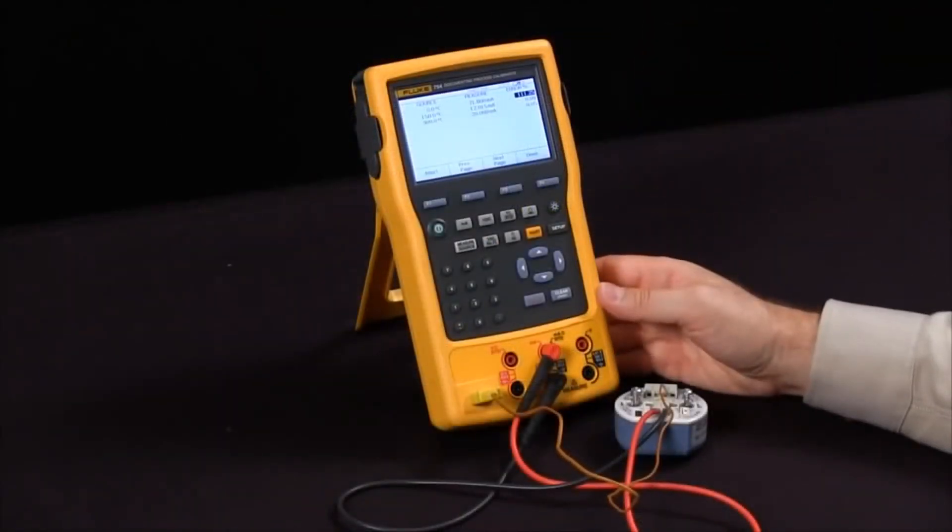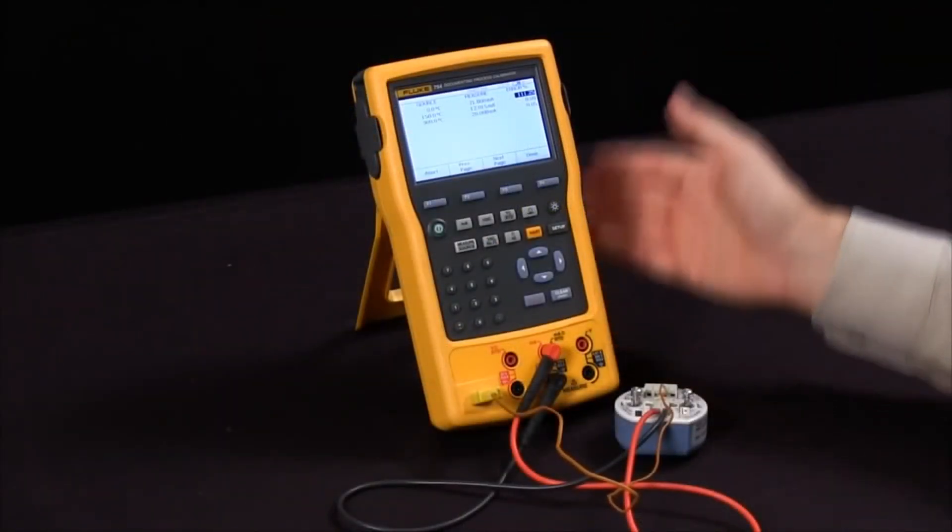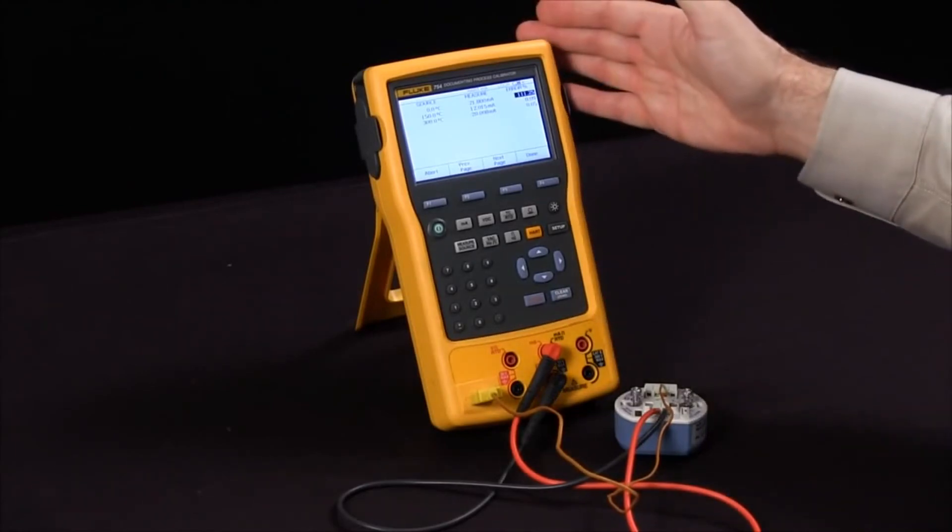So this is how you communicate with the HART device and perform a calibration using the Fluke 754 documenting process calibrator.